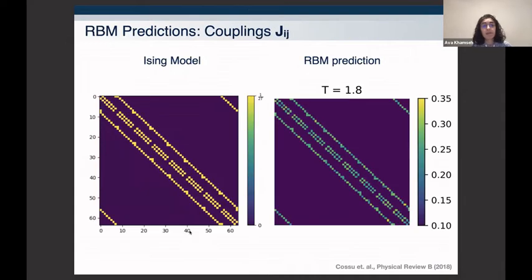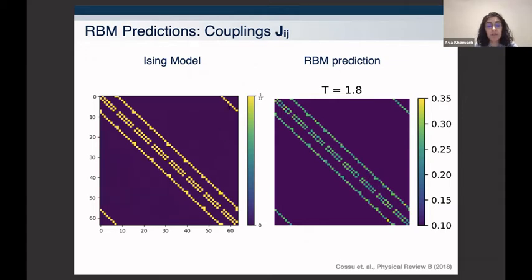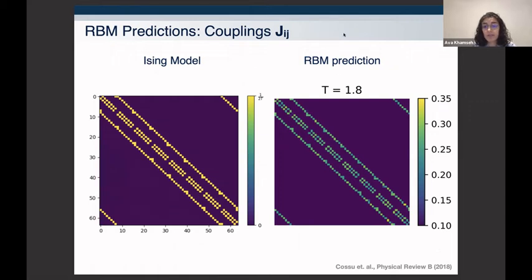The figure on the left shows the actual Ising model coupling between pairs of spins — the pattern reflects translational invariance and periodic boundary conditions, with non-nearest neighbors having essentially zero coupling. On the right we see the RBM predictions after training with the criterion mentioned, and it basically follows exactly the same pattern, nailing all the couplings accurately for every temperature we tried.